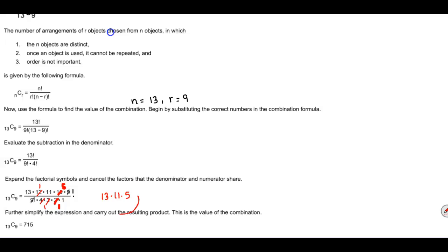And so if we multiply the numbers 13 times 11 times 5, that's going to give you the final result which is 715. And that is being divided by 1 because everything in the denominator had simplified to 1.